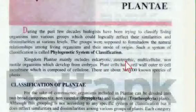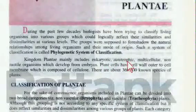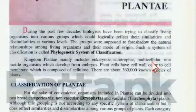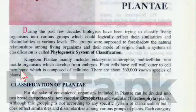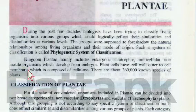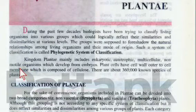Autotrophic means they can prepare their own food. Multicellular means they are composed of more than one cell. Non-motile organisms are those which cannot perform locomotion — they cannot move. And they develop from embryos.